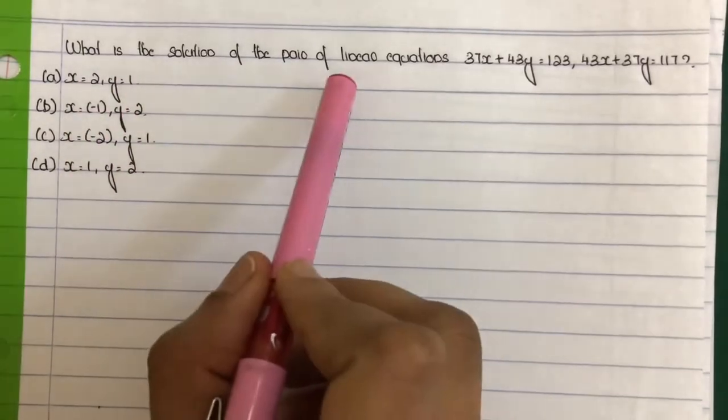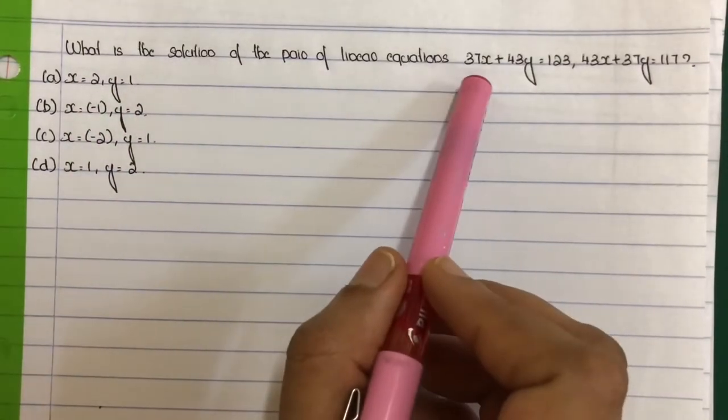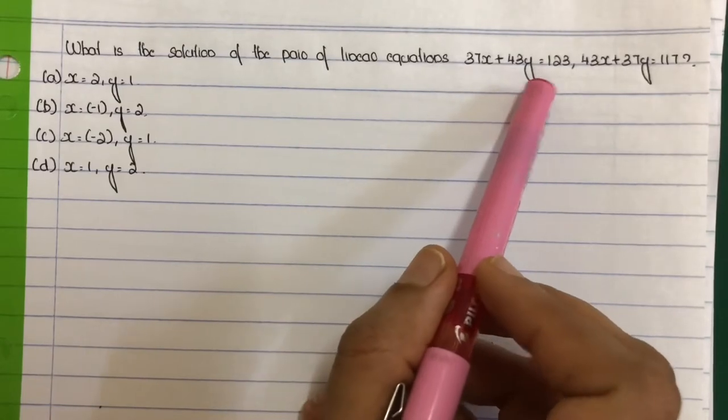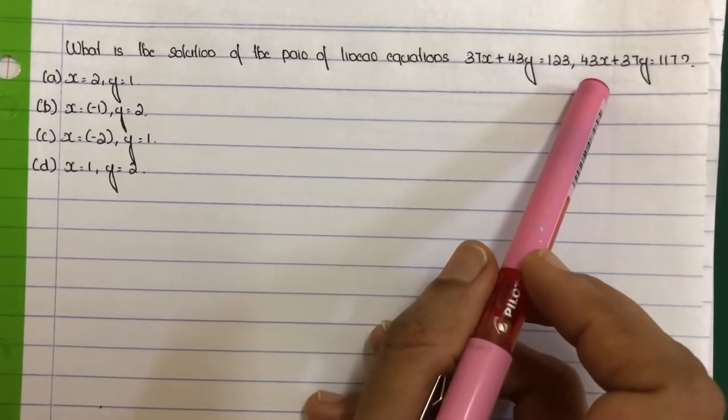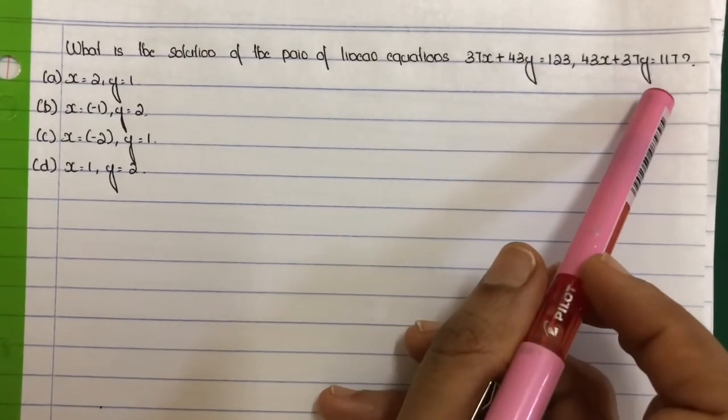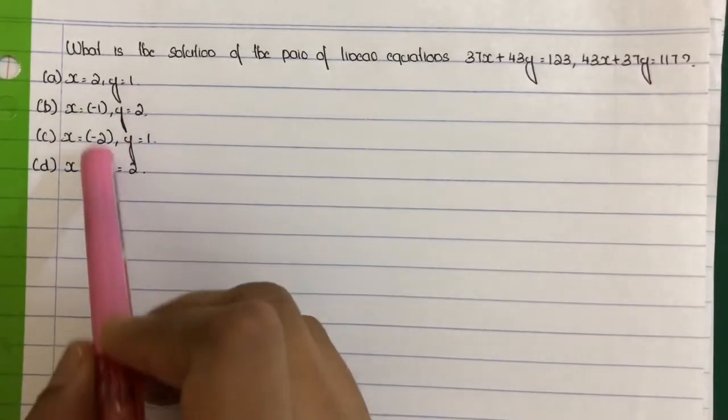What is the solution of the pair of linear equations? 37x plus 43y equal to 123, 43x plus 37y is equal to 117.